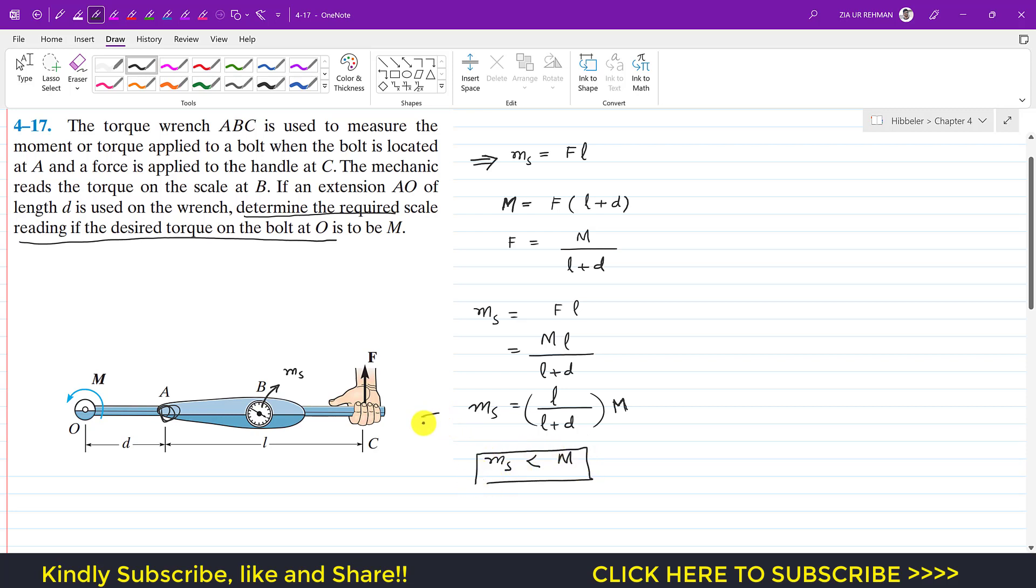So this is the scale reading in terms of M when the attachment is attached with the length of D and if we know the moment at point O. This is the solution of this problem. I hope this will help you in your learning. Do subscribe Engineers Academy if you haven't done it yet.